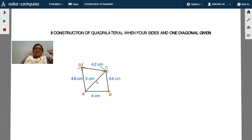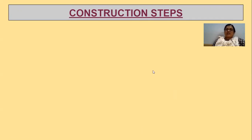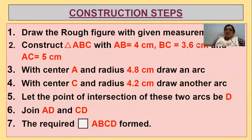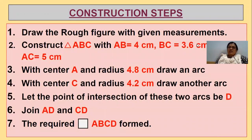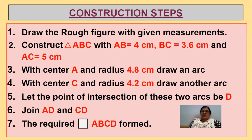With how many measurements did we construct the quadrilateral? We need 5 measurements: 4 sides and 1 diagonal are given. This is the procedure to construct a quadrilateral when 4 sides and 1 diagonal is given.